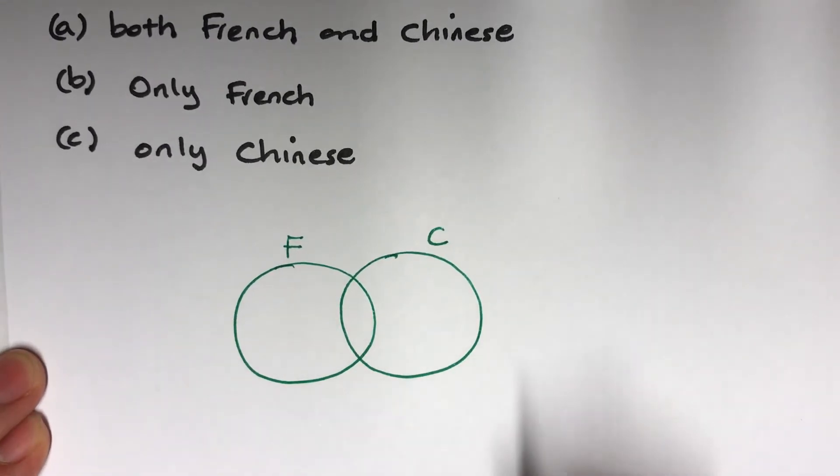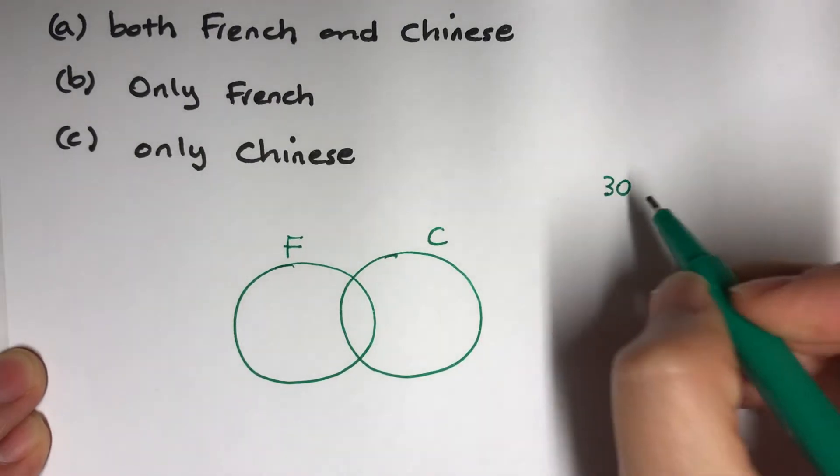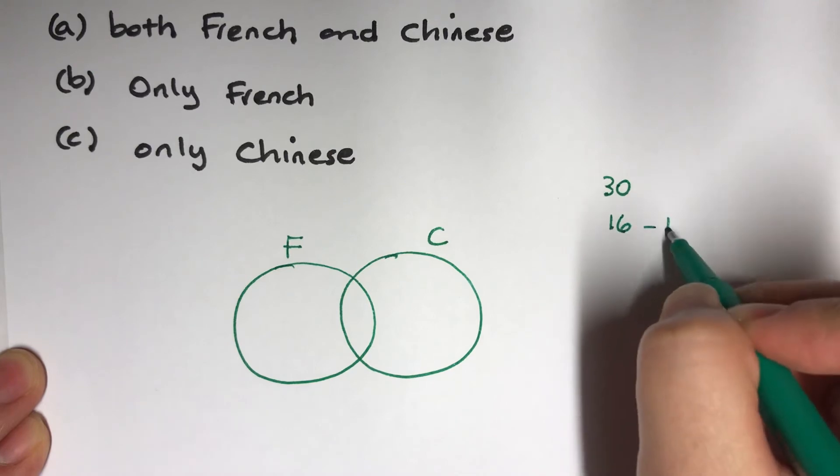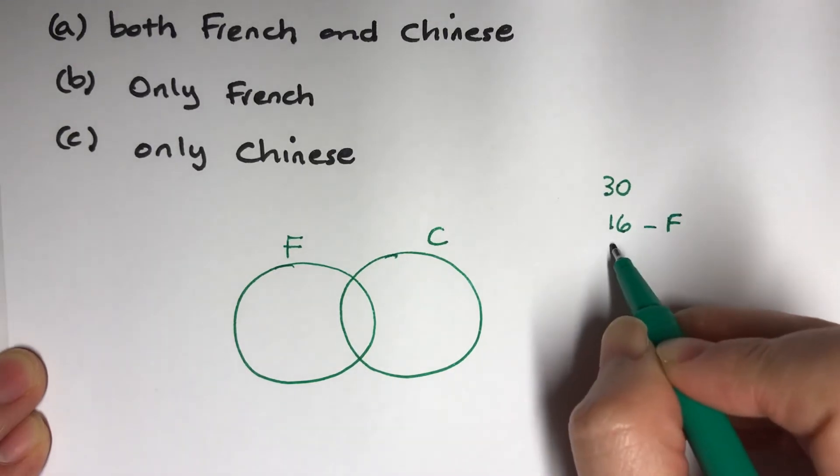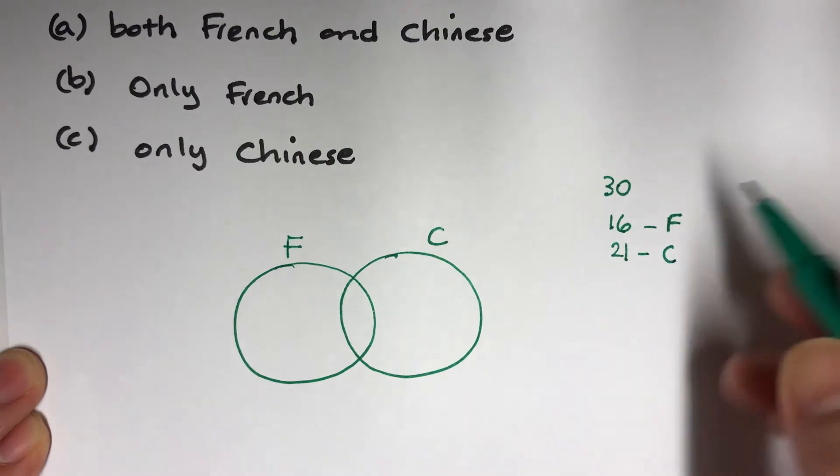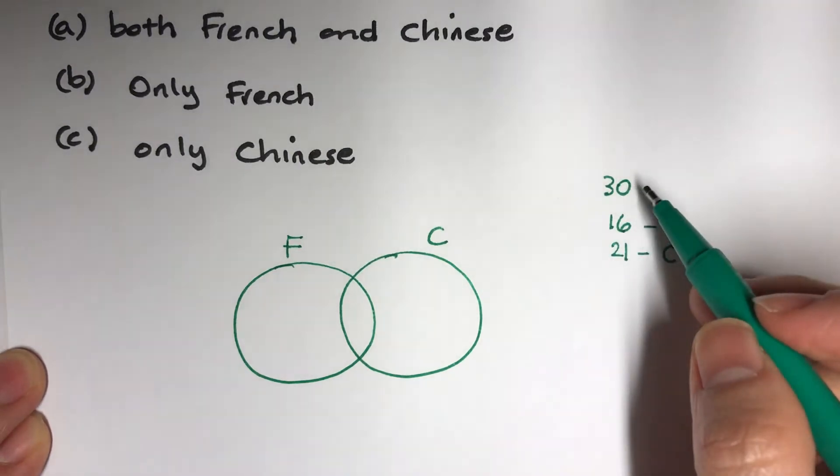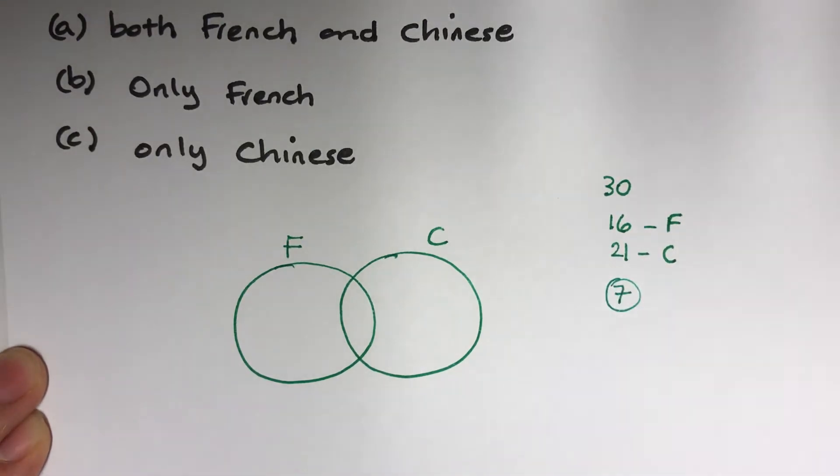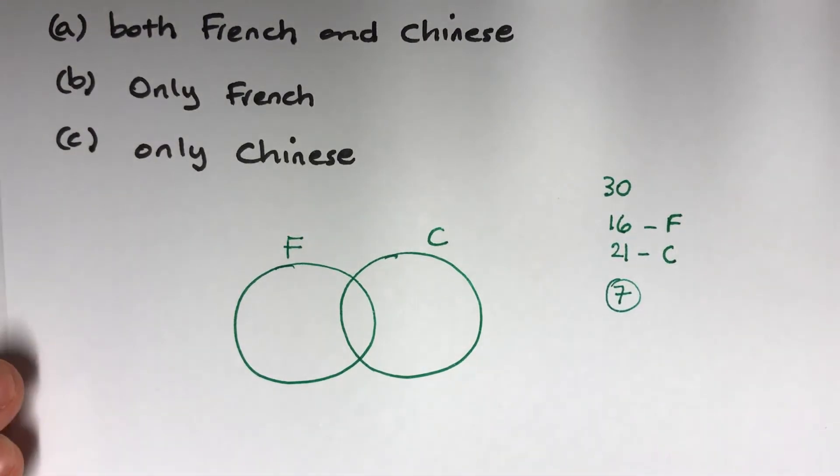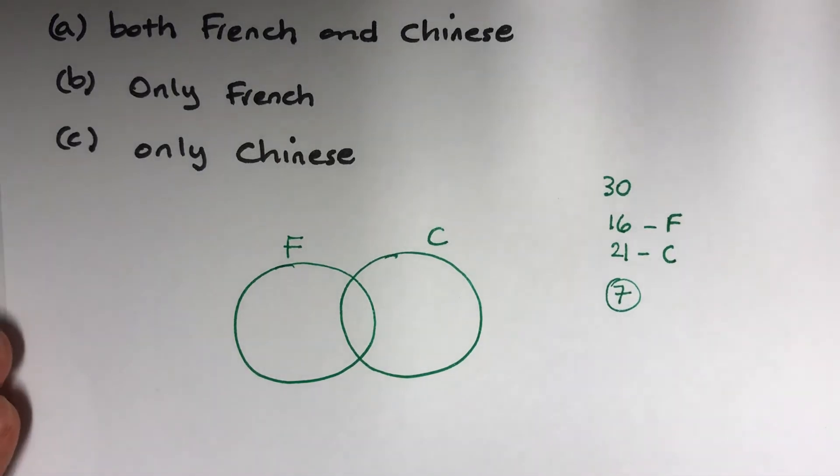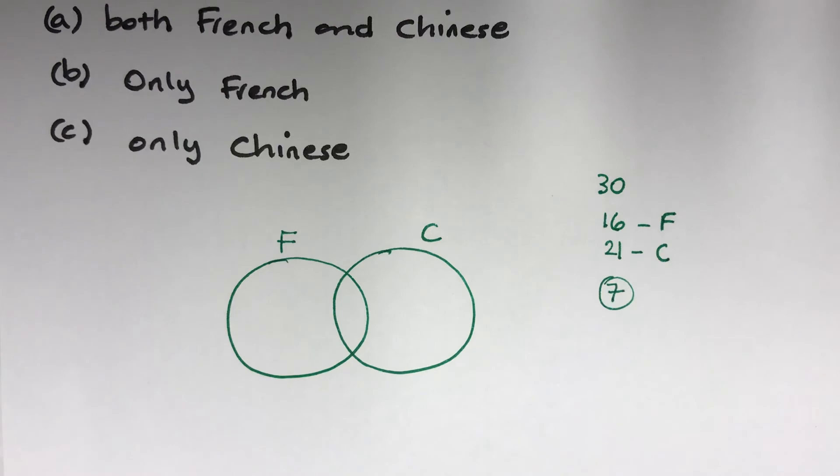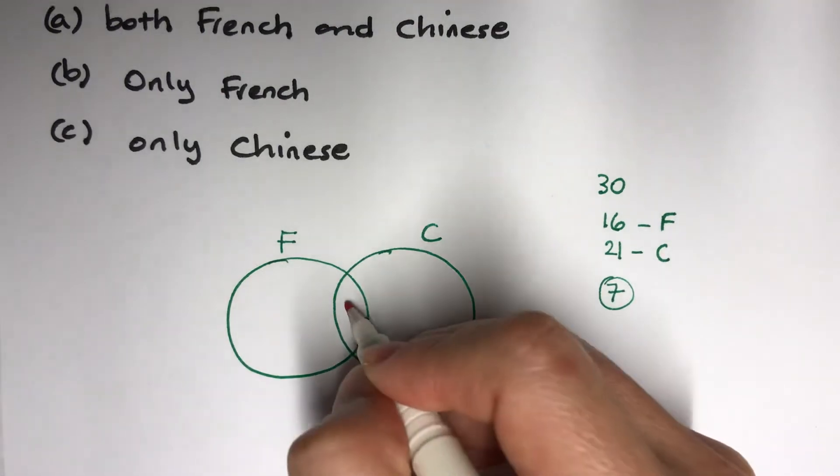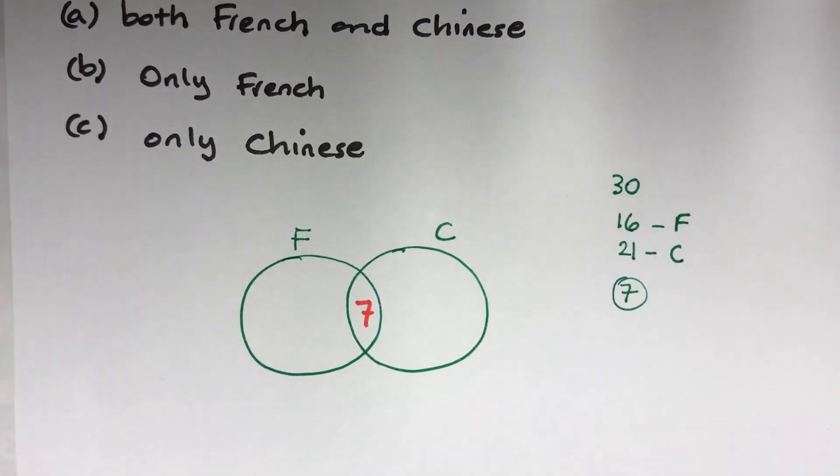This one is French, this one is Chinese. We've got 30 students and we have 16 French and 21 Chinese. Now when you add this together, that's way over 30. How much over? Seven. Because 16 plus 21 is 37, take away 30, so the overlapping here is 7 people, pretty much doing Chinese and French. What talented kids.